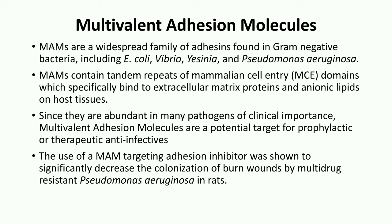The next example is multivalent adhesion molecules, known as MAMs. These are a widespread family of adhesins found in almost all gram-negative bacteria, including E. coli, Vibrio, Yersinia, and Pseudomonas aeruginosa. MAMs contain tandem repeats of mammalian cell entry domains. These domains specifically bind to ECM proteins and anionic lipids on the host tissue. Since they are abundant in many pathogens of clinical importance, MAMs are potential targets for prophylactic or therapeutic anti-infectives. The use of MAMs-targeting adhesion inhibitors was shown to significantly decrease the colonization of burn wounds by multi-drug-resistant Pseudomonas aeruginosa in rats.